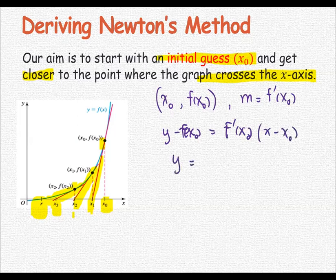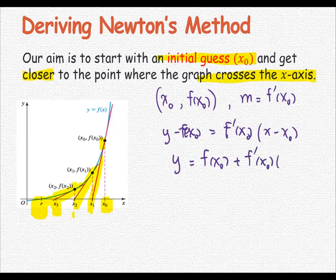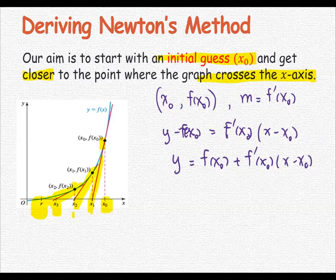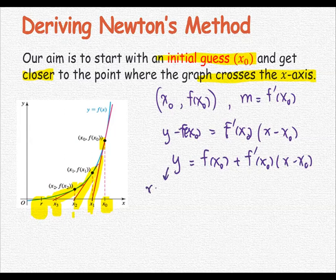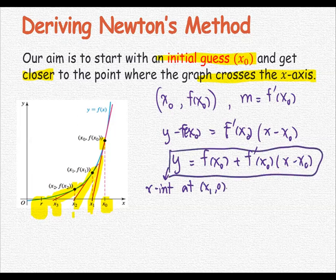The equation is in the form y = f(x₀) + f'(x₀)(x - x₀). This tangent line has the x-intercept at (x₁, 0). That means this ordered pair (x₁, 0) will satisfy this equation. So replace y with 0 and x with x₁.